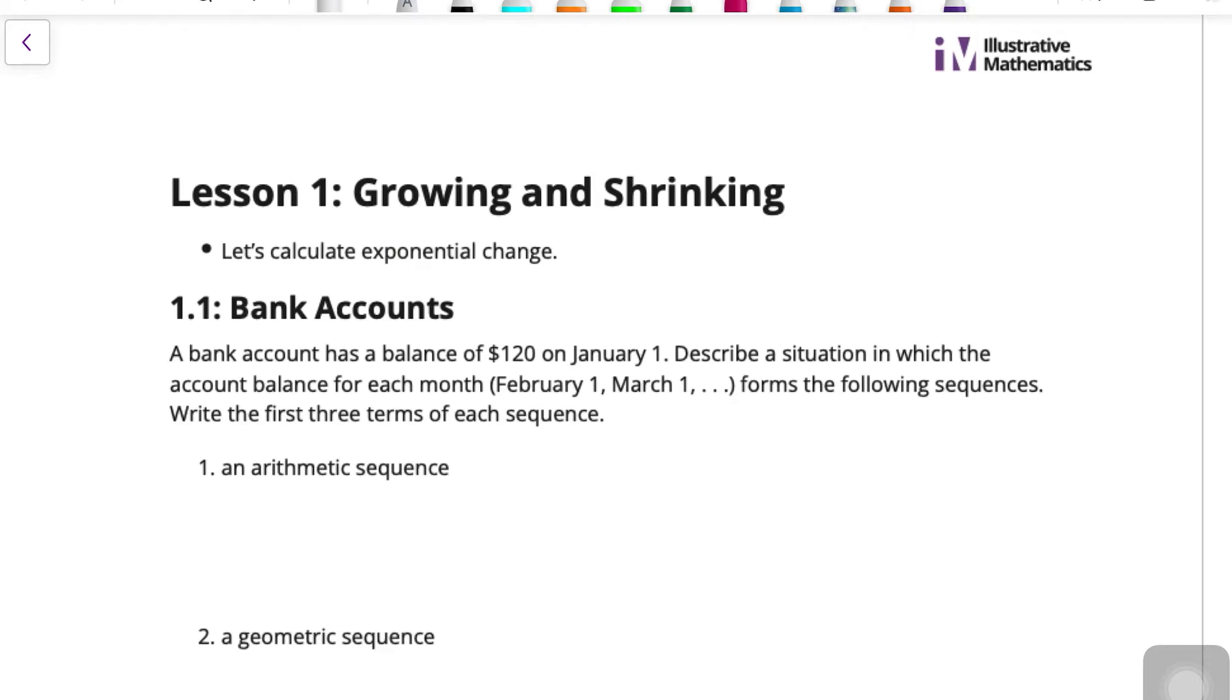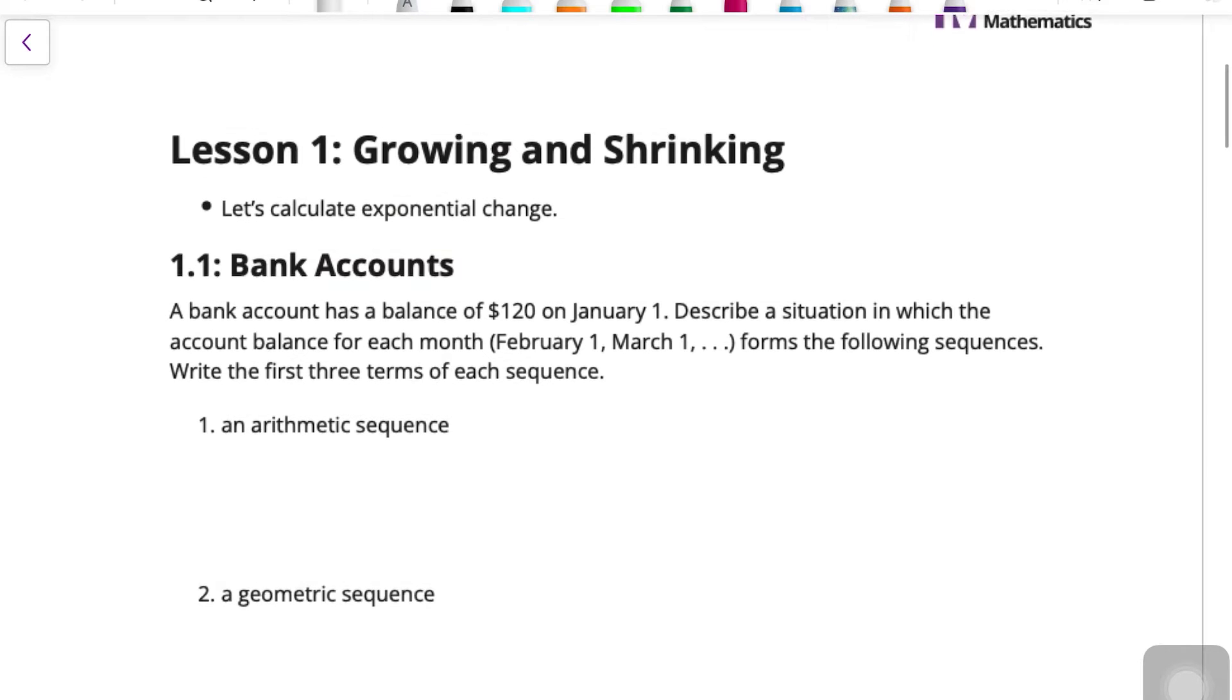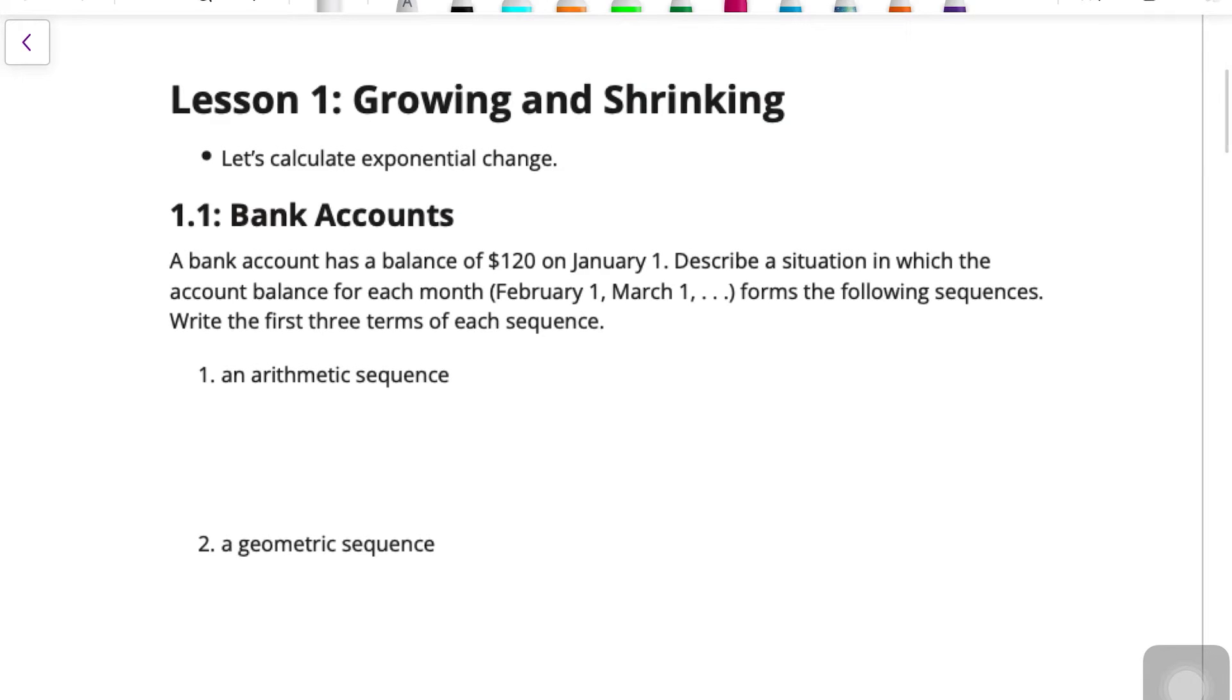Write the first three terms of each sequence. All right, so if we want an arithmetic sequence, remember that arithmetic means that we're adding every time and there's no interest being accrued or anything. We're just adding the same amount every time. So we could say that each month $20 is deposited into the account.